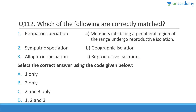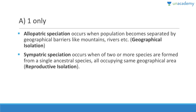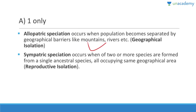Which of the following are correctly matched regarding speciation? Peripatric speciation — members inhabiting a peripheral region of the range undergo reproductive isolation — that is correct. Sympatric speciation involves reproductive isolation, and allopatric speciation involves geographical isolation. The answer is A — one only. Allopatric speciation occurs when a population becomes separated by geographical barriers like mountains and rivers.